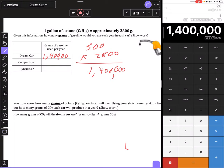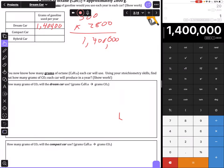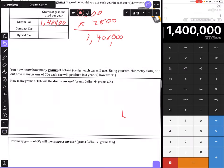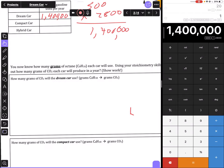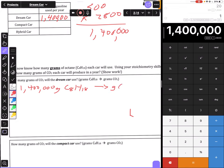Once you know how many grams of octane each car will use, use your stoichiometry skills to calculate how many grams of CO2 each car will produce in a year. In my example, I'm starting off with 1,400,000 grams of octane, which is C8H18, and I want to go to grams of CO2. It's a three-step stoichiometry problem.